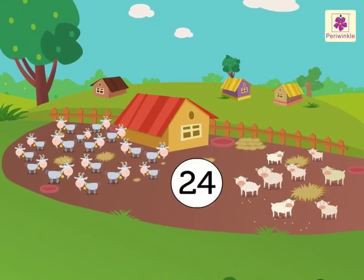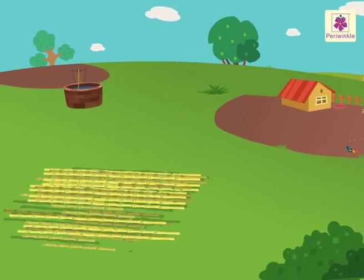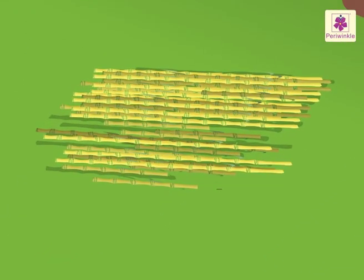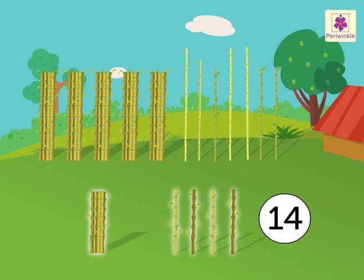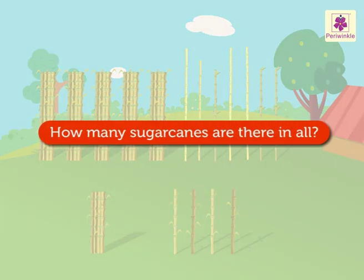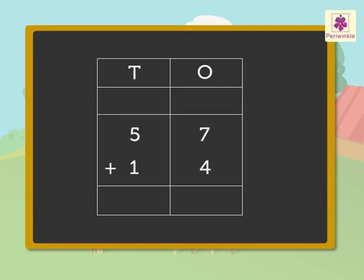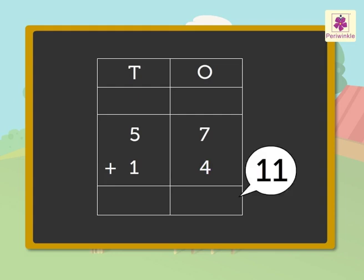Look at the juicy sugar canes. Some are big and some are small. There are fifty-seven big sugar canes and fourteen small sugar canes. Let's see how many sugar canes there are in all. Here we have to add fifty-seven and fourteen. Add the ones, that is, seven plus four is equal to eleven. Carry one-ten to the tens column and write one in the ones column.